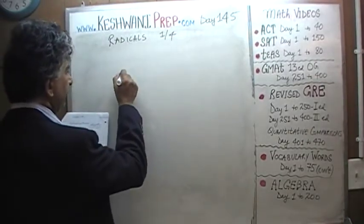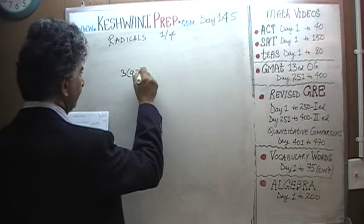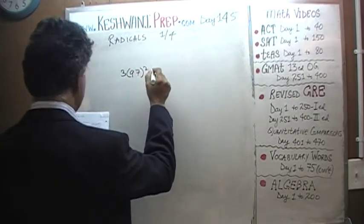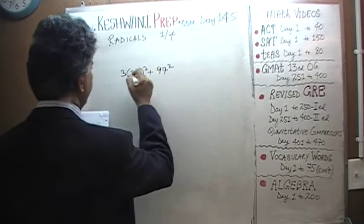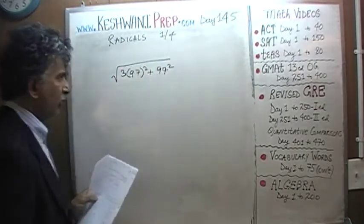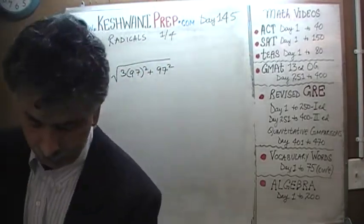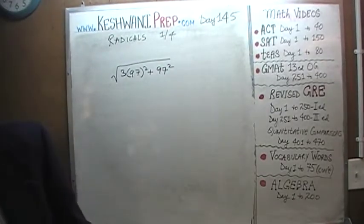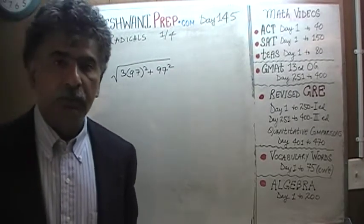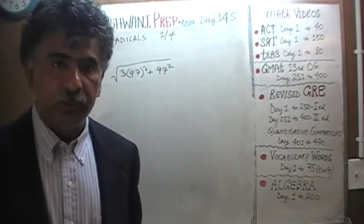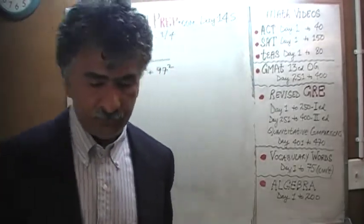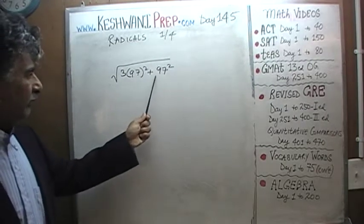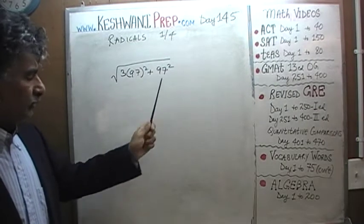We're given 3 times 97 squared plus 97 squared, and we're asked to take the square root of it. Pause the video to do it yourself first, then resume and compare your work against what we'll do together. One more time: 3 times 97 squared plus 97 squared.